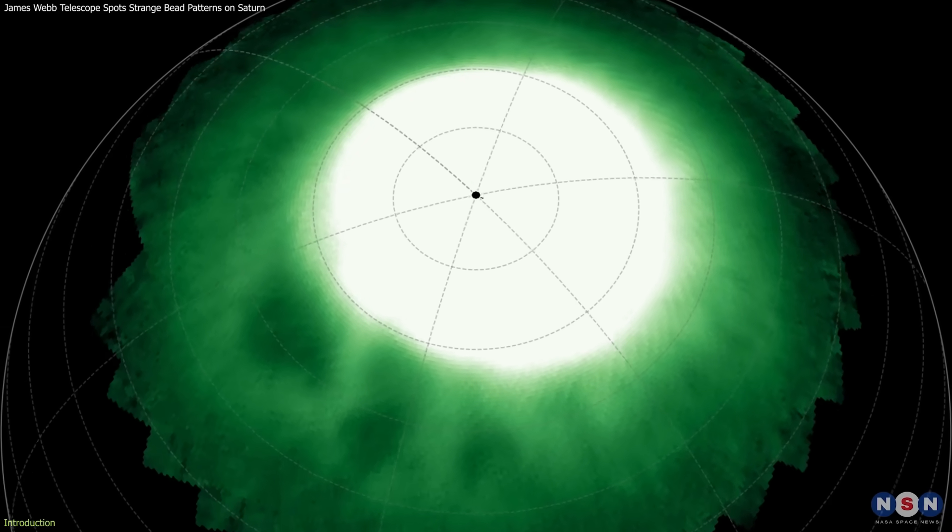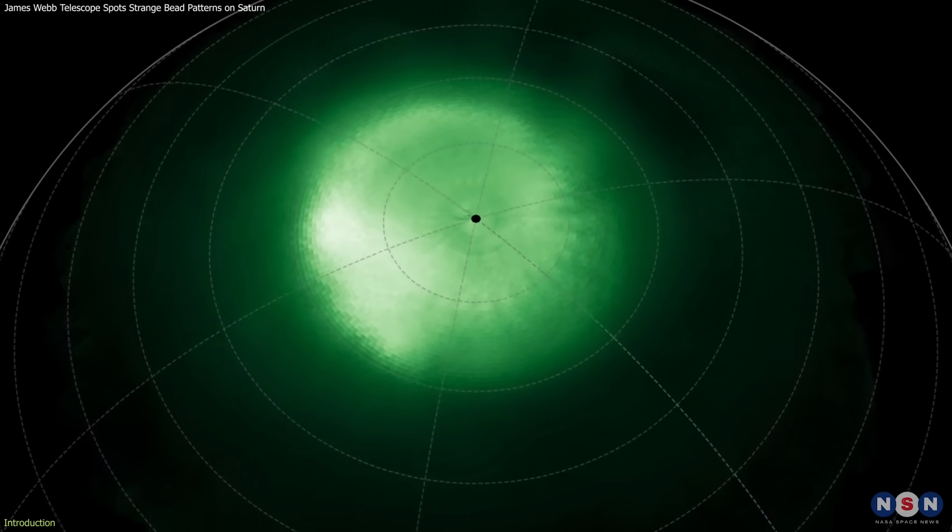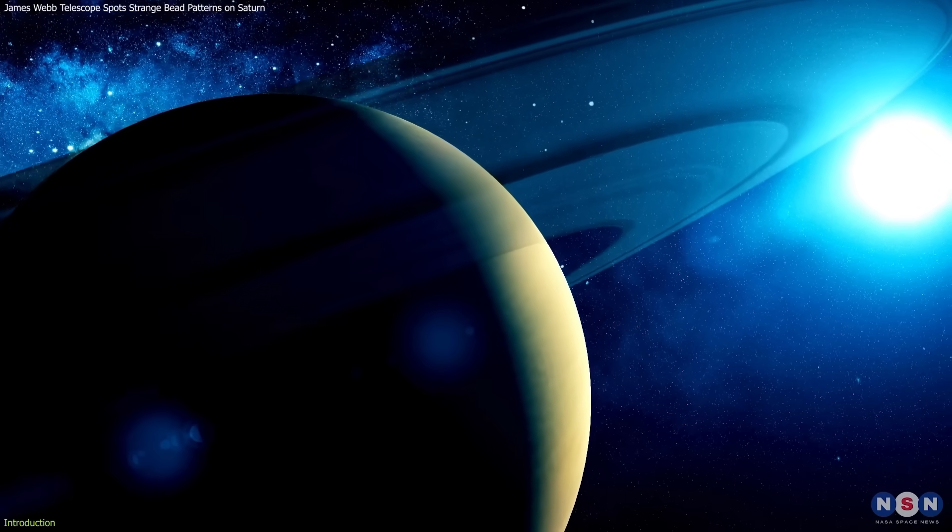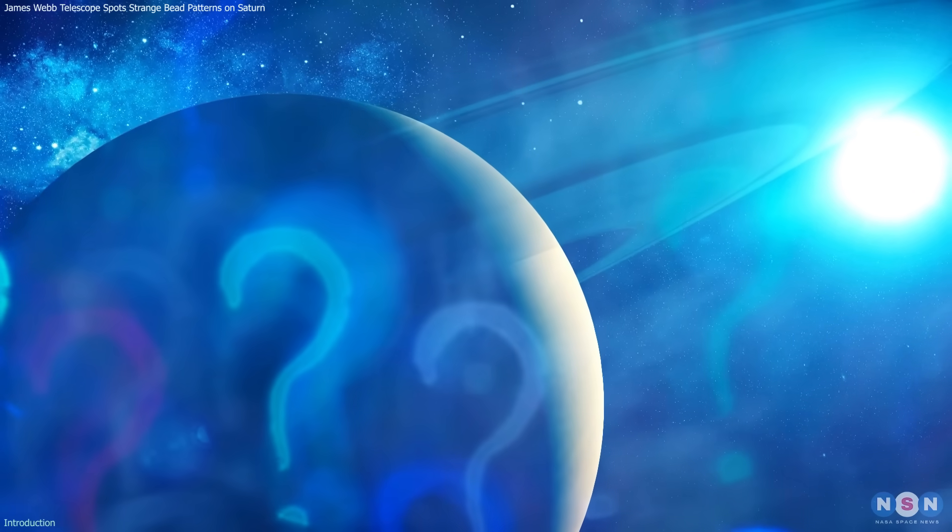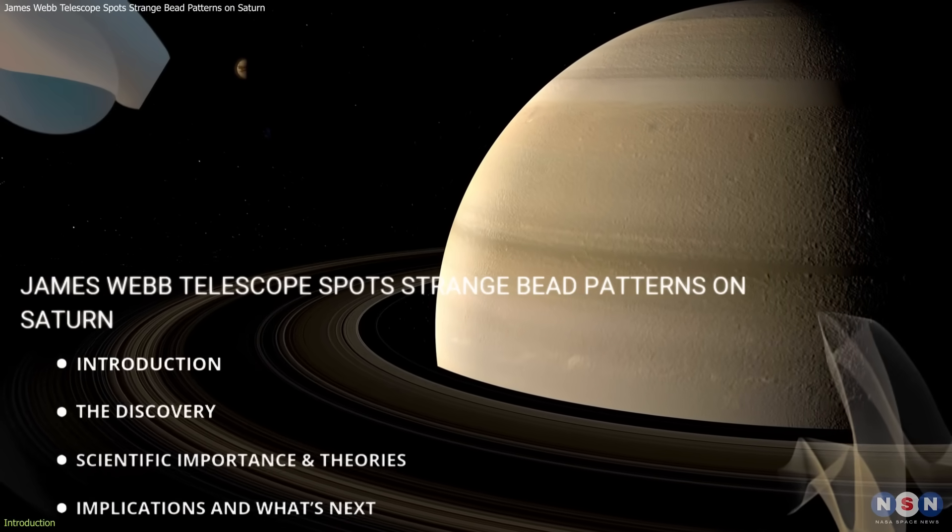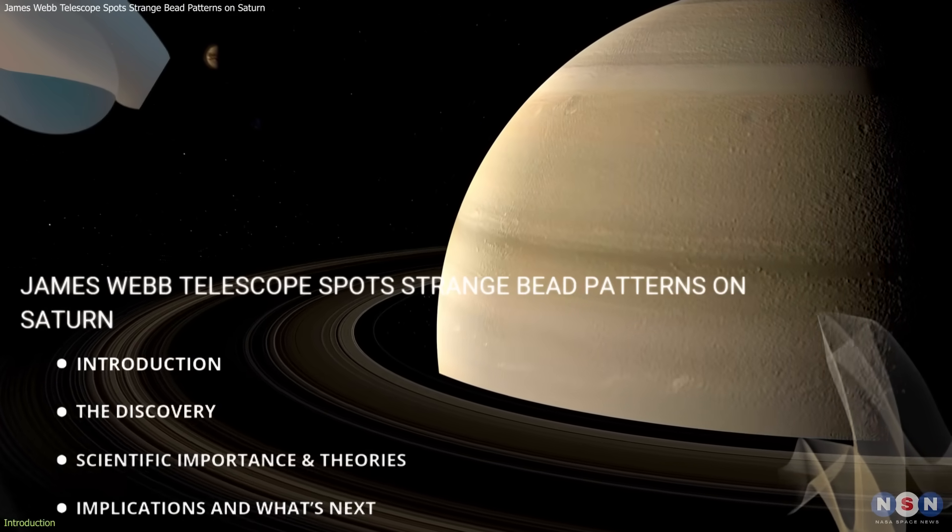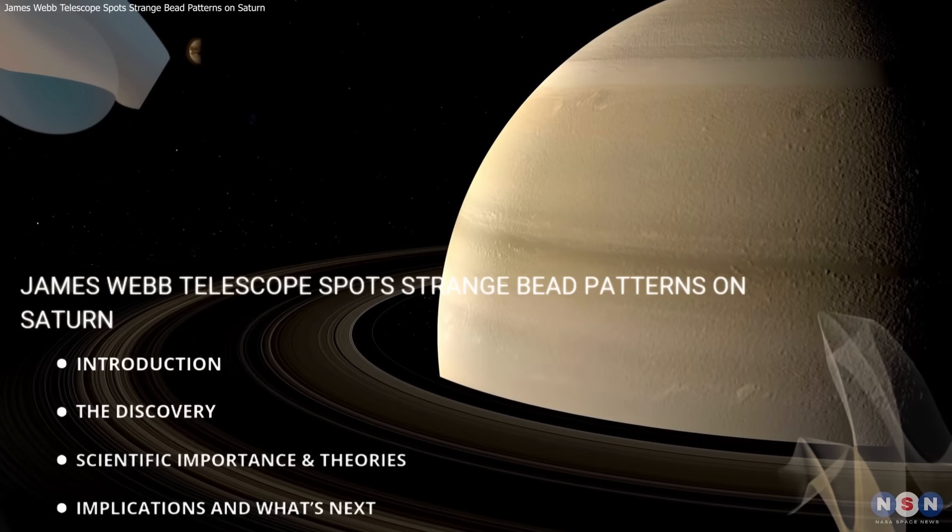Webb spotted mysterious dark beads in Saturn's auroras and a strange star-shaped pattern below, features never seen on any planet, and they're raising big new questions. In this video, we'll break down Webb's observations, what scientists think may be happening, and why it once again challenges our understanding of planetary atmospheres.